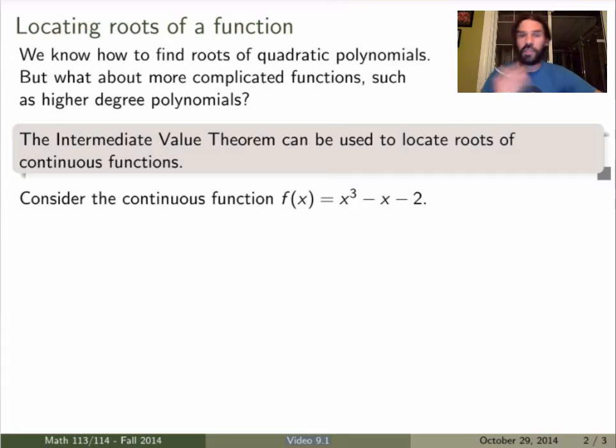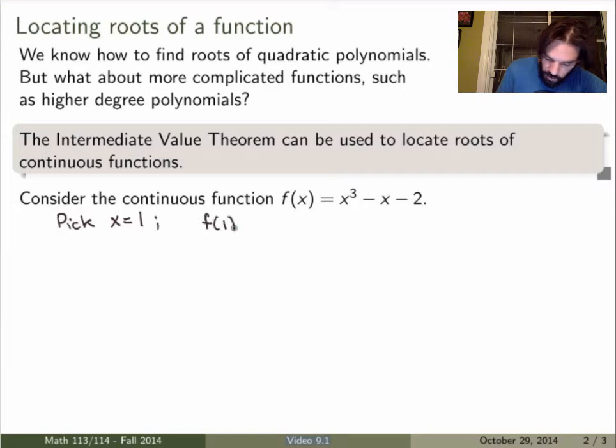So the IVT gives you a way of finding or locating roots of polynomials, or continuous functions. So let me just give you an example in this video. Let's look at the function x cubed minus x minus 2. How can you locate the roots using the IVT? Well one thing you can do is pick a number, suppose x equals 1 to start with, then the value of my function at 1 will be, in this case, 1 cubed minus 1 minus 2, which is just -2. Now let's pick a second number, say x equals 2. Now the value of my function here will be equal to 2 cubed minus 2 minus 2, which is equal to 4.